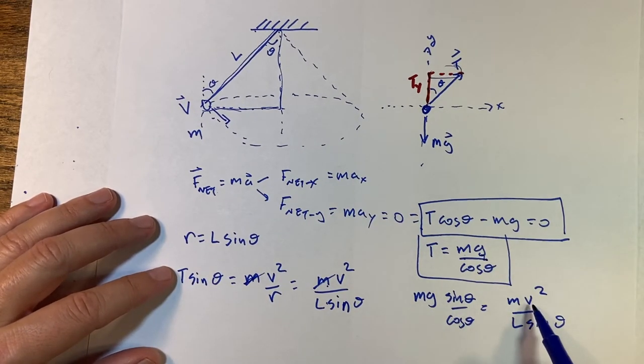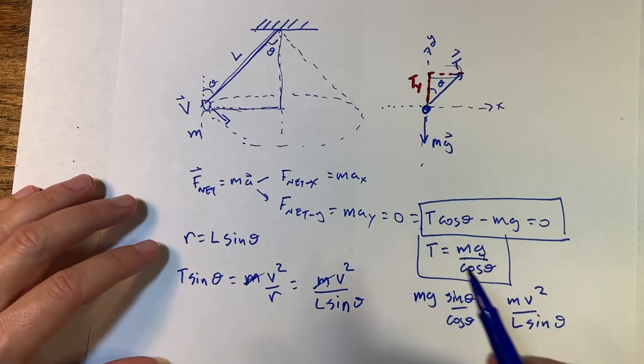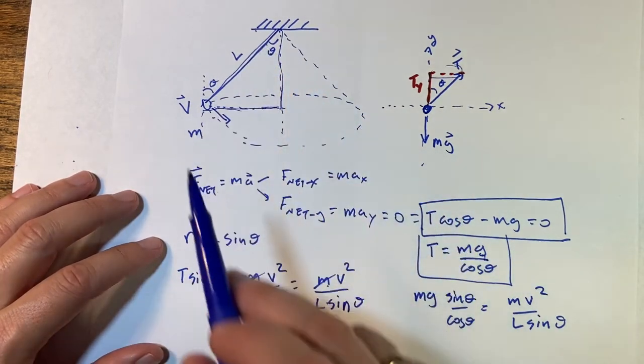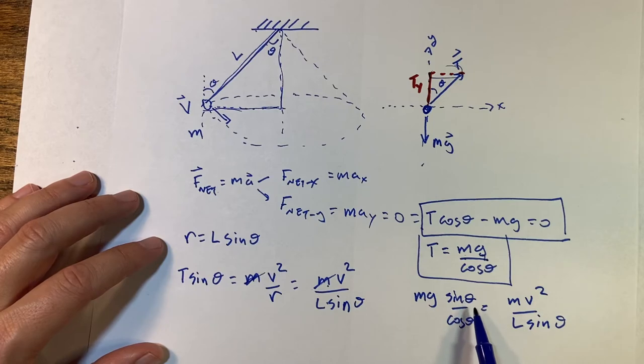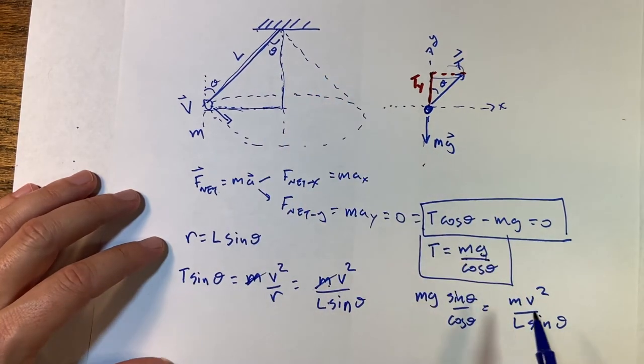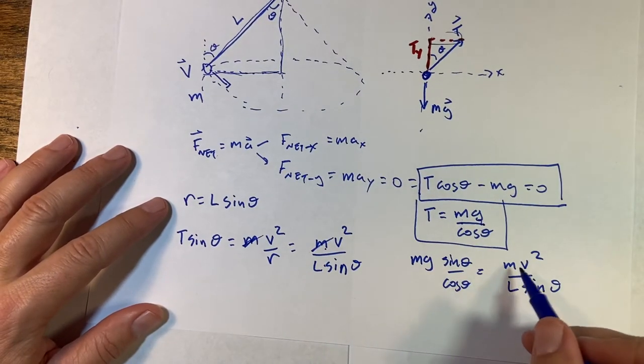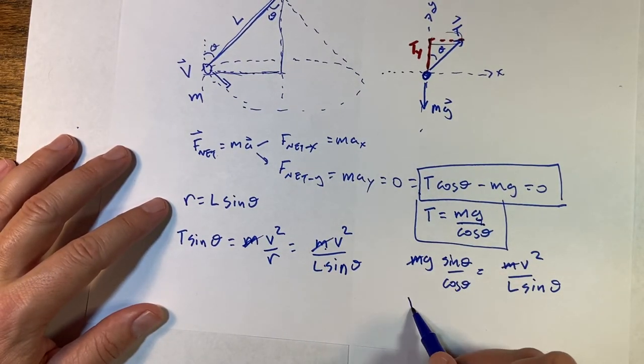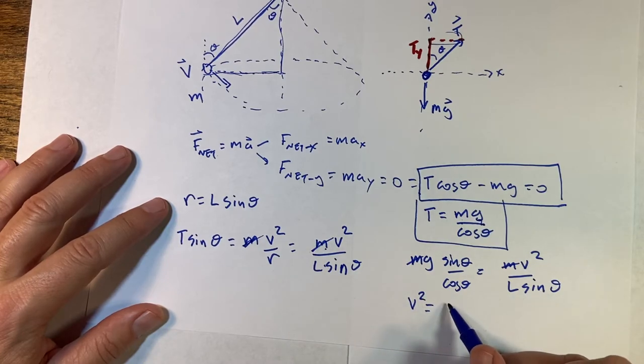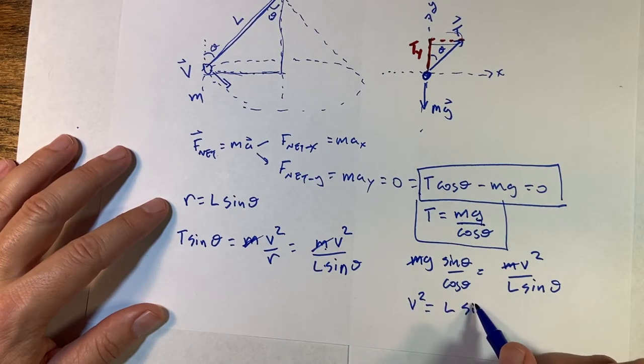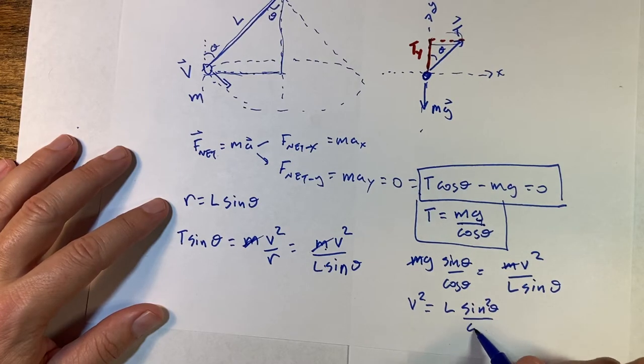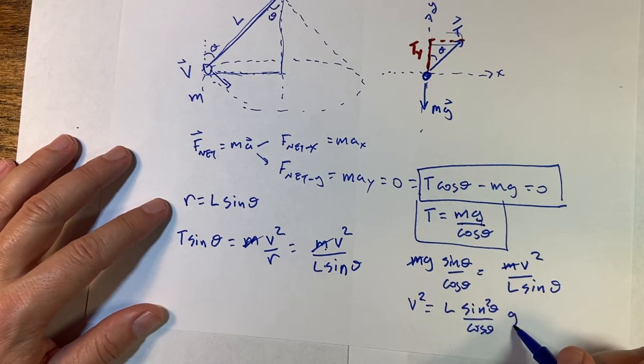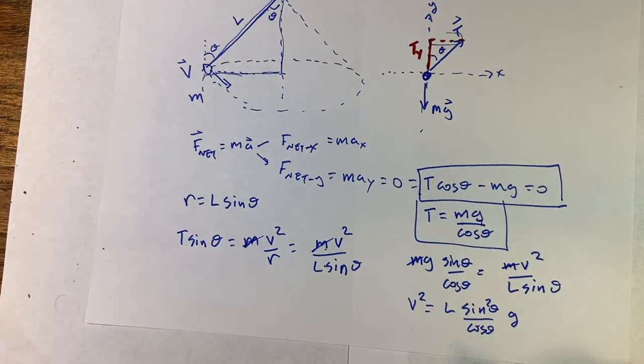So now what I want to solve for, let's say how fast I need to go at that angle. But one of the things you can see is that there is a relationship between the angle and the velocity. Let's just solve for that. So I'm going to solve this for v squared. The mass here does cancel. So I get v squared equals L sine squared theta over cosine theta times g.